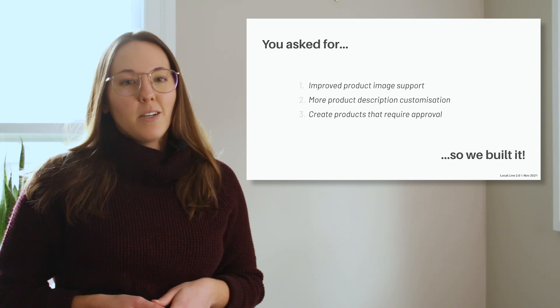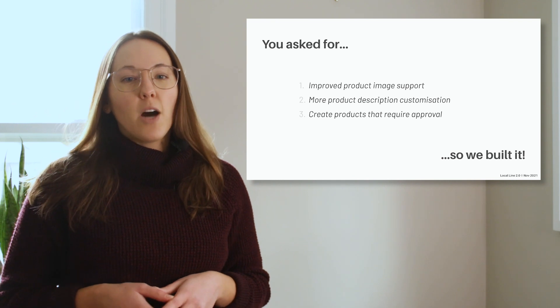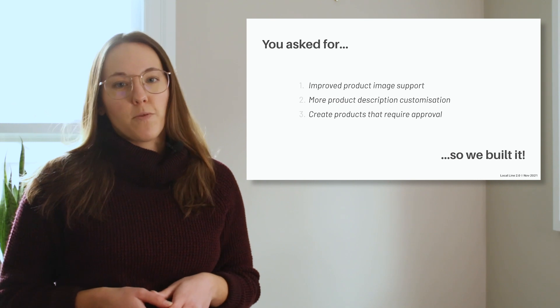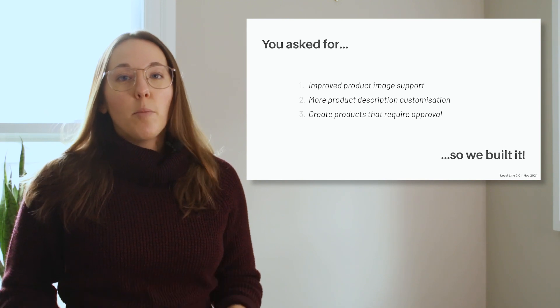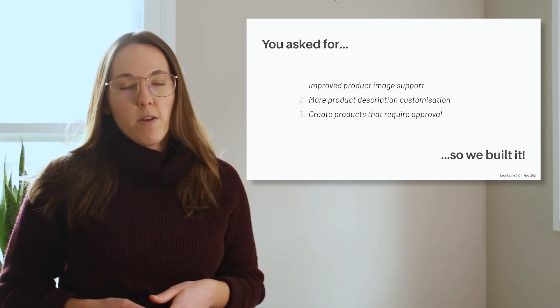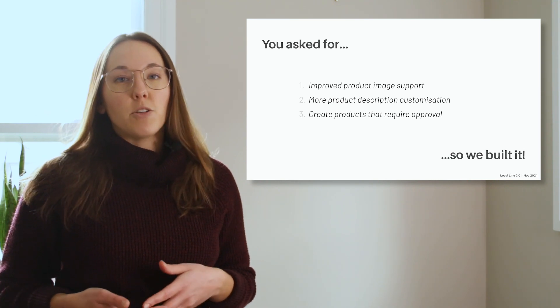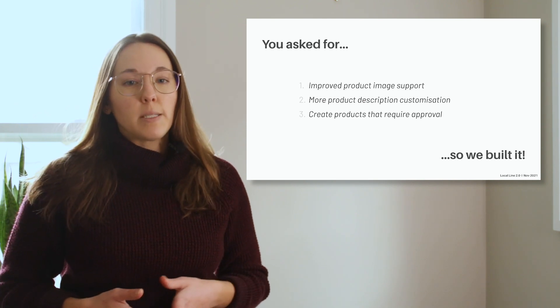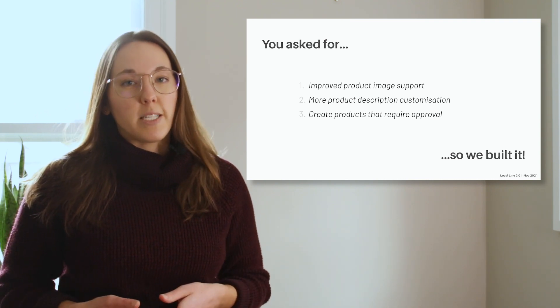In LocalLine 2.0, we've improved product image support. Now it not only lets you upload more images, but also has tools to help you manage your images and ensure that they are optimized for best performance on your storefront. You'll be able to add up to five images per product in familiar, common formats, so you won't have to do any reformatting before uploading. The images will be stored in a carousel so you can easily add, remove, reorder, preview, or download those images. Finally, image thumbnails are also displayed in your back office to help you navigate your products easier.